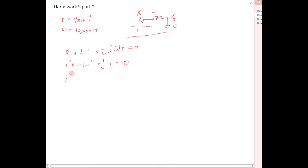So we're going to take the derivative of everything. So we have I prime R, Li double prime plus 1 over C i equals 0. We're going to isolate the I double prime term. So we have I double prime plus R over L I prime plus 1 over LC i equals 0. And this is our characteristic equation.